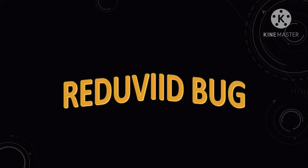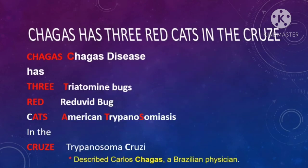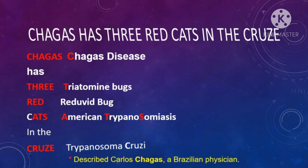Now we will learn about the reduviid bug. Reduviid bugs are also known as kissing or vampire bugs, as they habitually feed around the mouth of people. Chagas disease was first described by Carlos Chagas, a Brazilian physician. It is caused by triatomine bugs — a variety of reduviid bugs — and because it is more prevalent in Latin America, it is also termed American trypanosomiasis. The disease is caused by Trypanosoma cruzi. The mnemonic is: 'Chagas has three red cats in the cruise.'